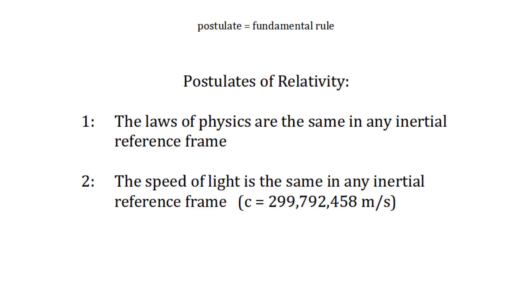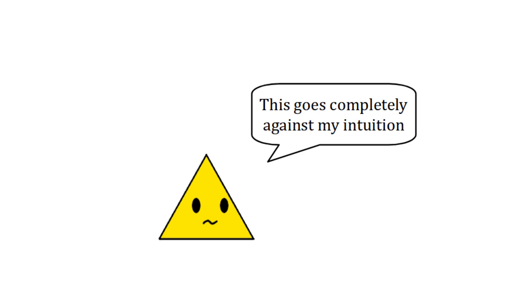It states that the speed of light is the same in any inertial reference frame. Specifically, it's 299,792,458 meters per second, and we use the letter C to refer to this value. Unlike the first postulate, this one goes completely against all intuition.